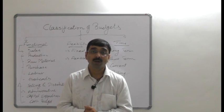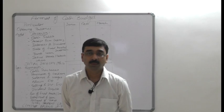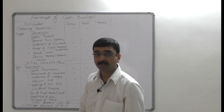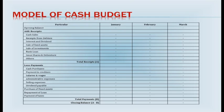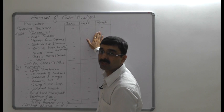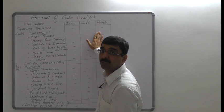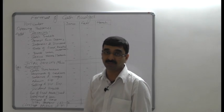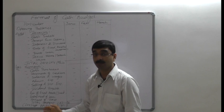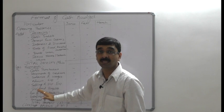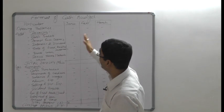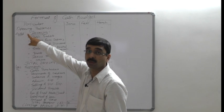Now, in the final phase of the cash budget segment, this is a format of cash budgeting. Here, information is estimated for three months of one organization: January, February, and March. The goal is to identify which items would be recorded under the cash budget. It is divided into two parts: receipts and payments. The format always starts with the opening balance.